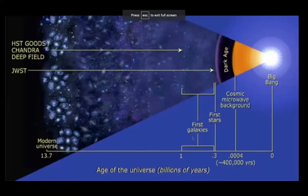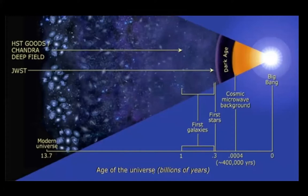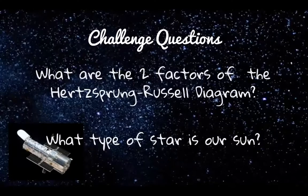These telescopes help us look into the past of the universe and learn about star life cycles and the formation of stars. The Hubble, launched in 1990, is able to see billions of years back in the age of the universe. The James Webb Space Telescope will be able to see even further back to when the first galaxies and stars were formed. My challenge questions for you: what are the two factors of the Hertzsprung-Russell diagram, and what type of star is our sun?